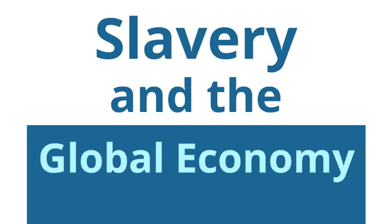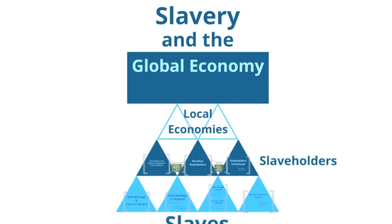The only way we're ever going to end slavery is by attacking the slaveholders' profit margins. If slavery is not profitable, the slaveholders will walk away from the business entirely. Businesses began practicing slavery as a result of its profitability, and if it becomes more profitable to turn away from slavery, businesses will do this on their own.